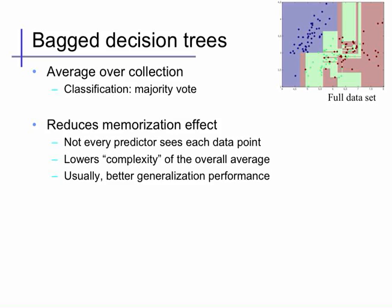Now we take that collection and combine it into an overall average with an unweighted sum. In this case we're classifying, so we take a majority vote - if the majority of classifiers picks a particular class we predict that one. This reduces the memorization effect since not every predictor can see each data point. A region will only be predicted to a class if it has enough support among all the data points that in most of the decision trees we learn, that region is still assigned to the class. This will lower the complexity of the overall predictor and typically lead us to better generalization performance.